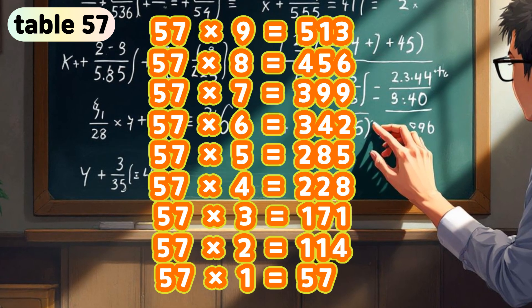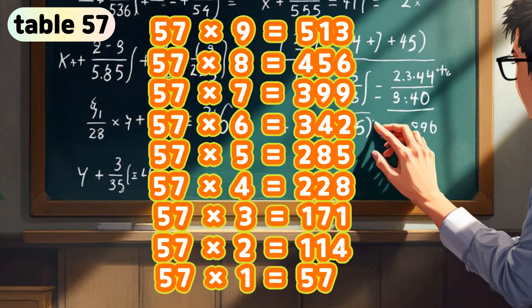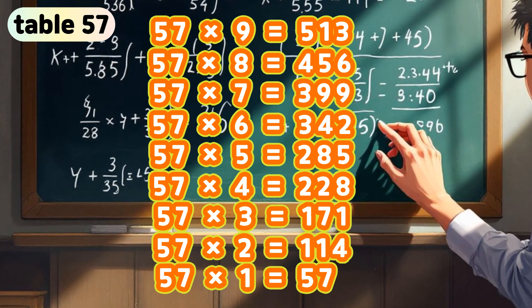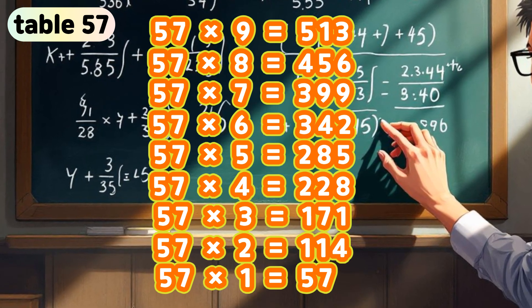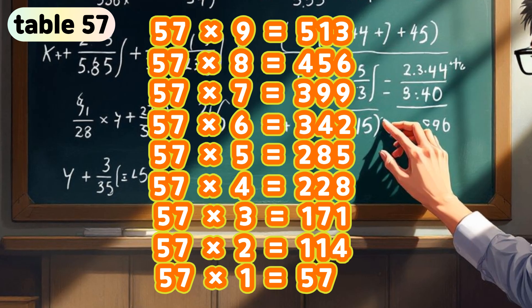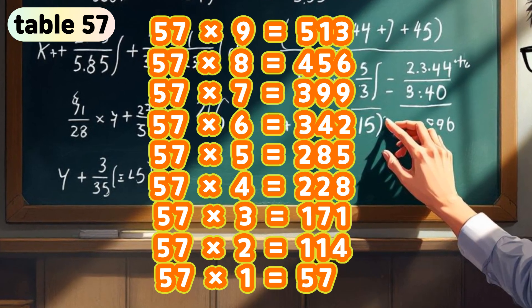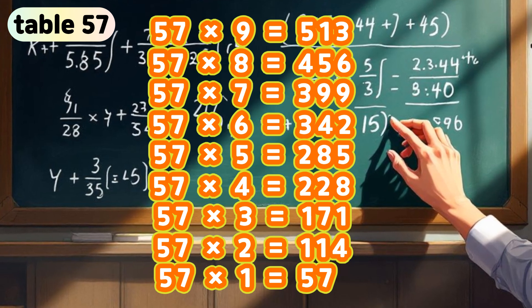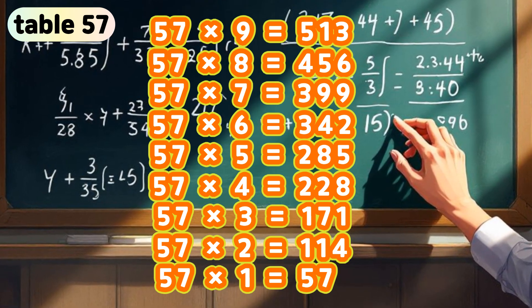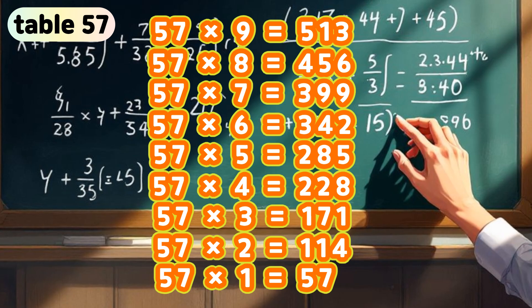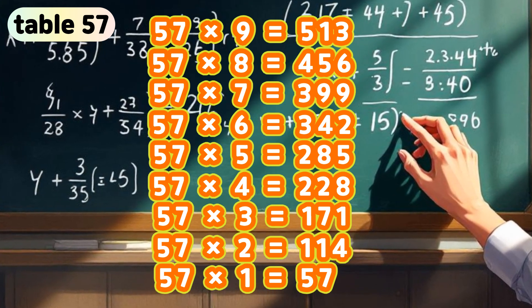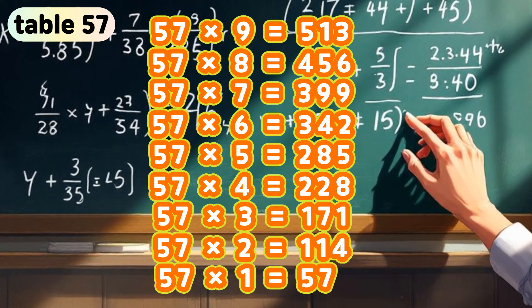Table 57. 57 times 9 is 513. 57 times 8 is 456. 57 times 7 is 399. 57 times 6 is 342. 57 times 5 is 285. 57 times 4 is 228. 57 times 3 is 171. 57 times 2 is 114. 57 times 1 is 57.